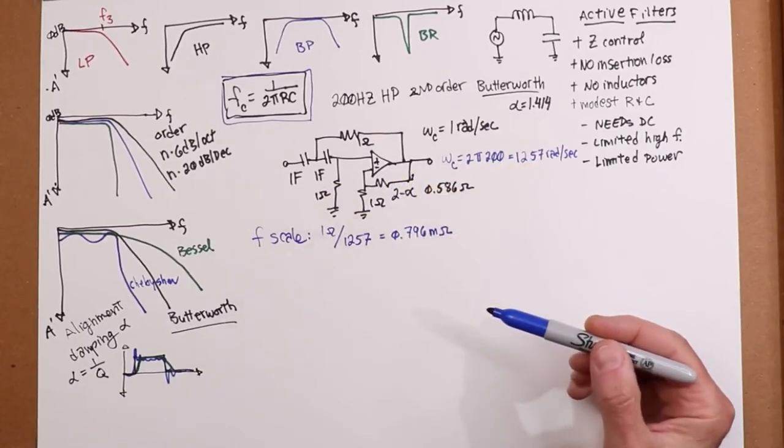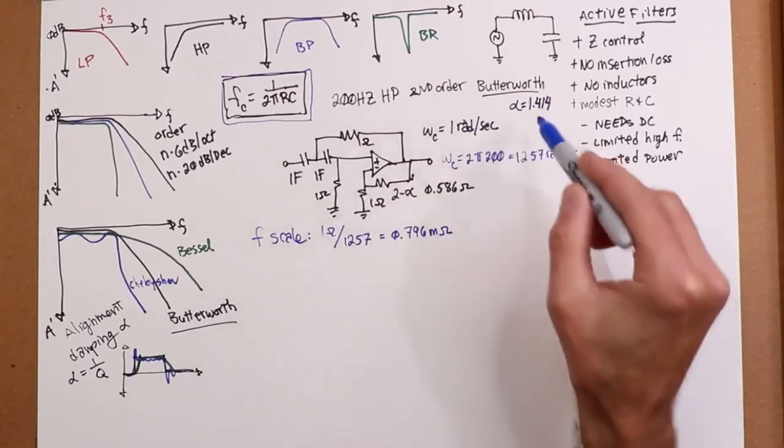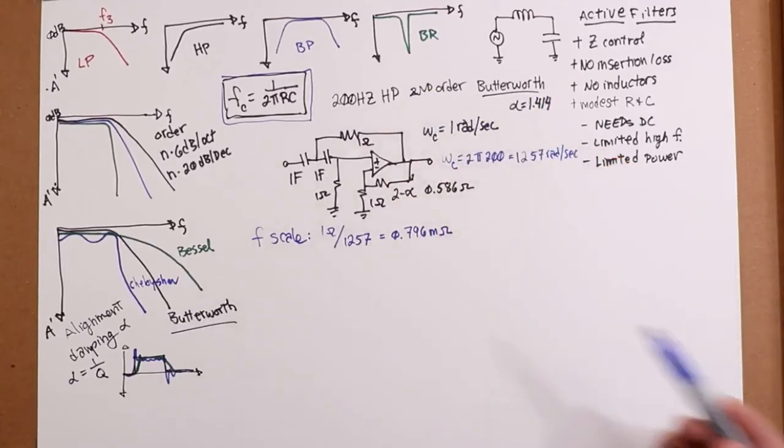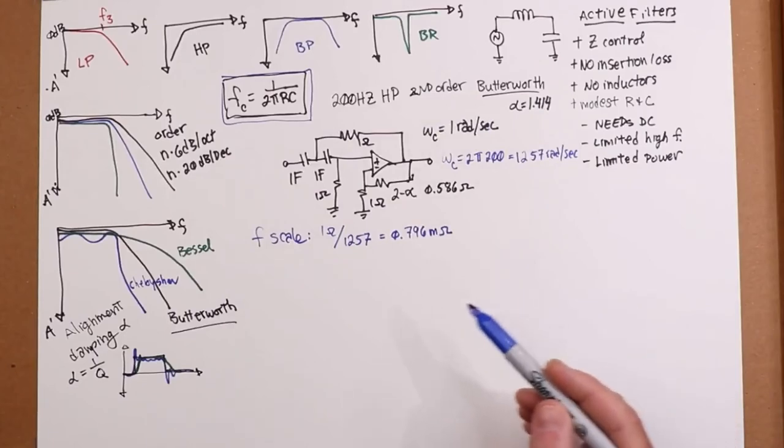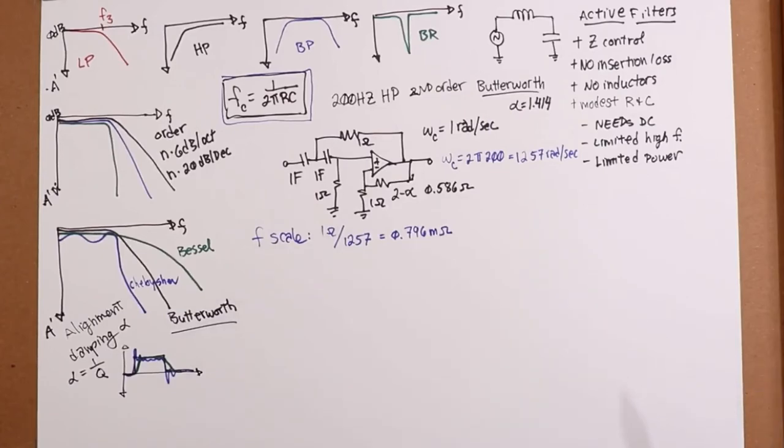On paper, I have what I want. In other words, I have a 200 hertz high-pass second-order Butterworth filter. It is, of course, completely impractical. You call up a distributor and say, I want a 0.796 milli ohm resistor to go with my one-farad capacitors, and people are going to look at you like you've got six heads.